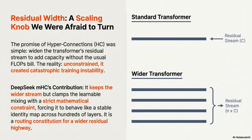The HCC idea was exciting. It widens the residual stream from the standard C channels to a multiple, like N times C - like turning a one-lane highway into a four-lane highway. The model learns how to mix and route information between those parallel streams. You get a lot more representational capacity without the quadratic FLOPs cost of just making the whole layer bigger.